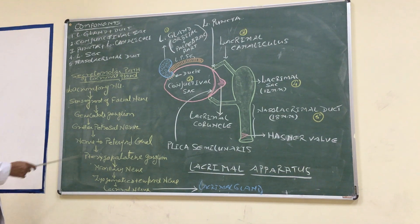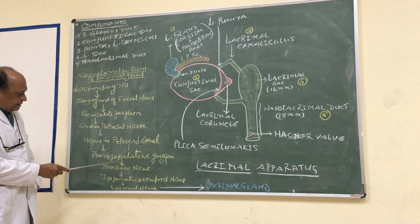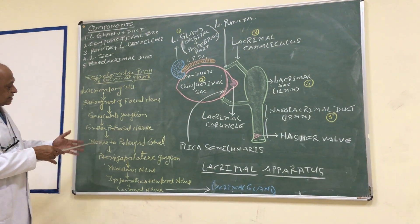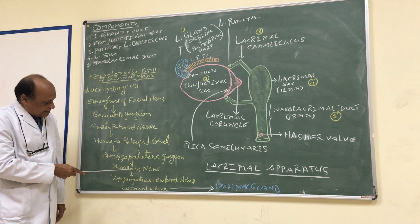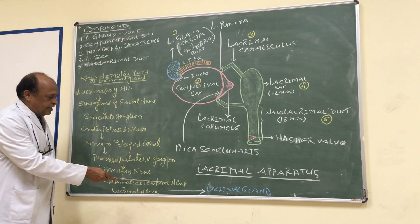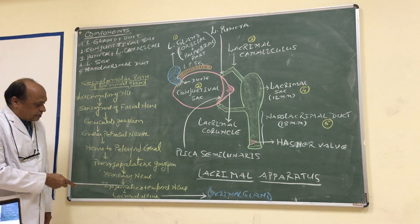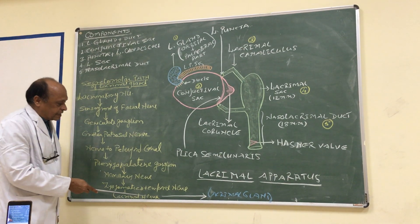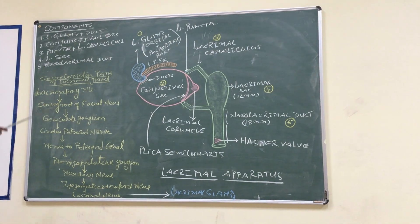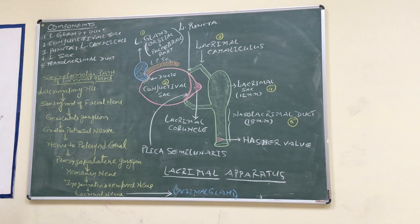As we know, this ganglion is situated in the fossa of the same name — the pterygopalatine fossa. Here the preganglionic fibers relay: they end, and the postganglionic fibers arise. These postganglionic fibers join the maxillary nerve, then its branch the zygomaticotemporal nerve, and from that nerve a branch joins the lacrimal nerve. Through the lacrimal nerve, the secretomotor fibers reach the lacrimal gland. So the lacrimal nerve is sensory as well as carries secretomotor fibers for the lacrimal gland.